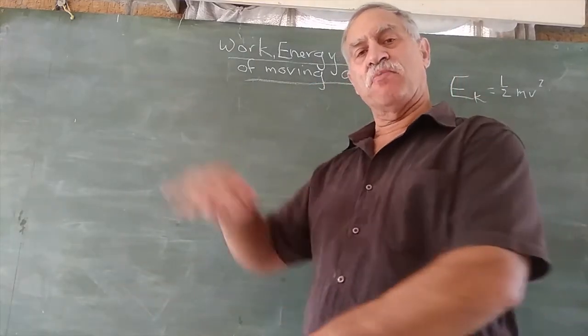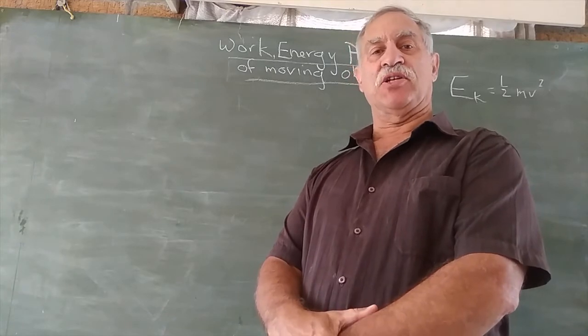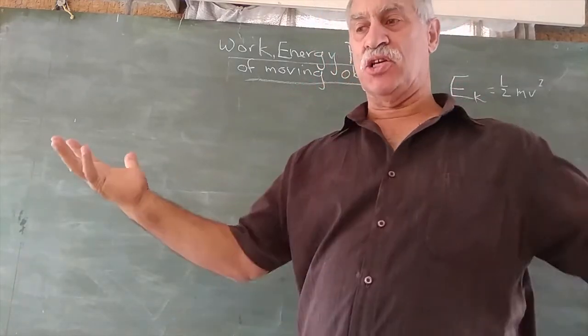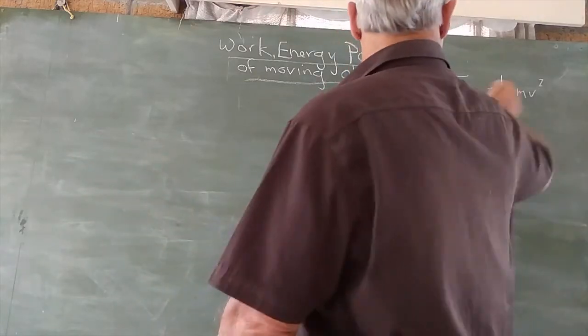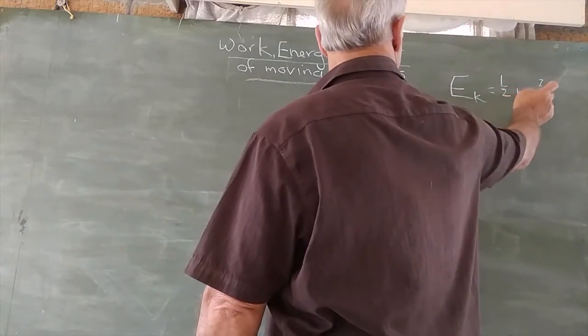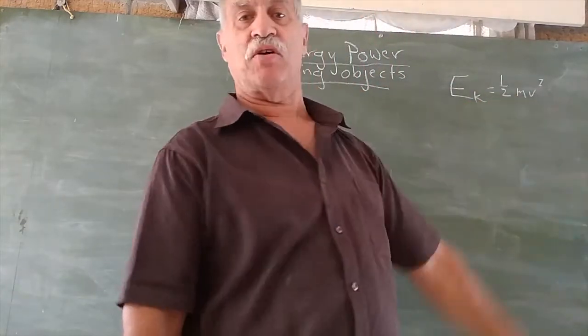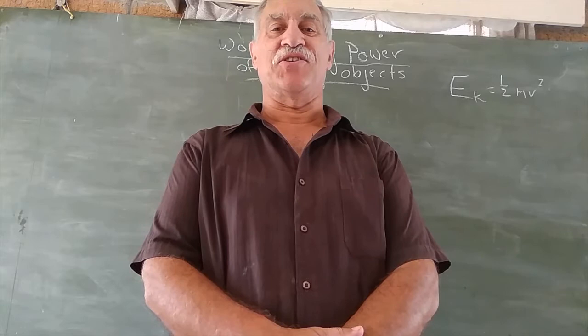Every moving object has a certain amount of energy, called kinetic energy—the energy of movement. It has the formula 1/2 mv². If we know the mass of the object and the velocity of the object, we can work out its kinetic energy.